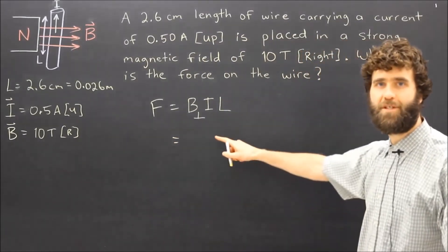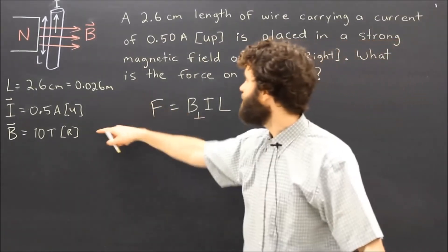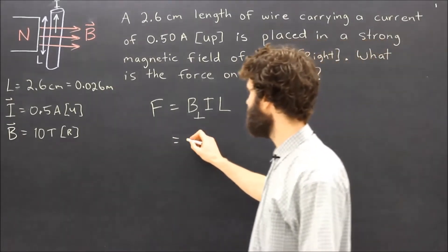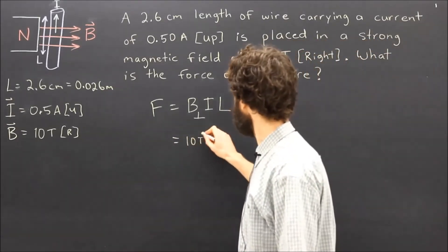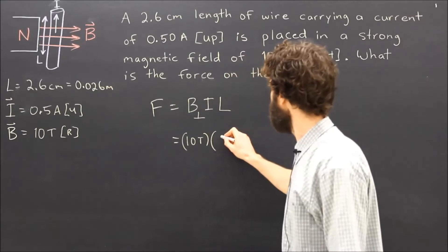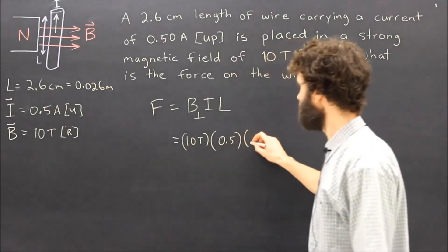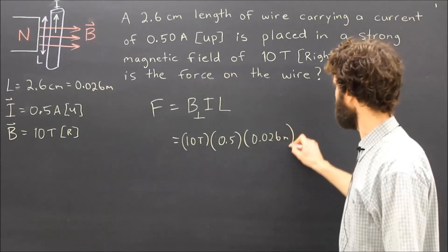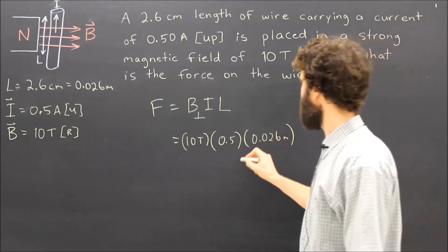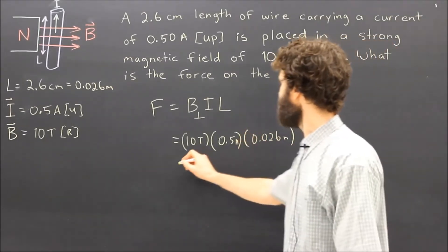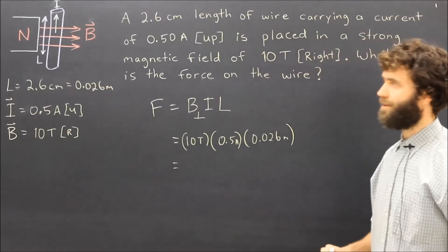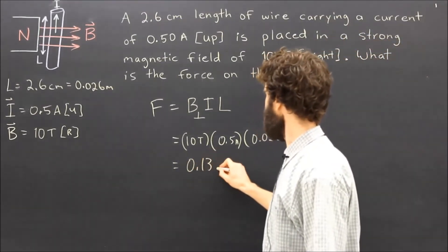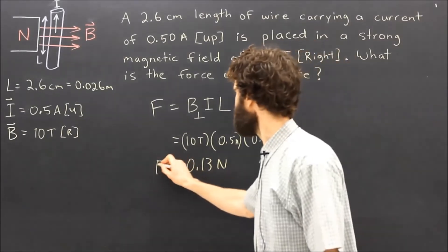This formula is quite simple to use. We just substitute in the values and then multiply to determine the value of the force. Once we calculate, we get an answer of 0.13 newtons of force.